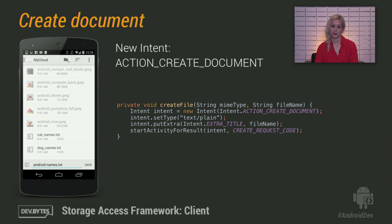Creating a document is also new in Android KitKat, and it's really straightforward. You give your intent a MIME type, a file name, and you launch it with a unique request code. The rest is taken care of for you. You get back its URI in onActivityResult, and that way you can continue to write to it or whatever else you want.